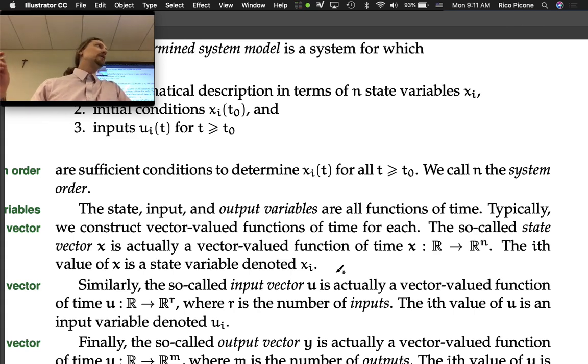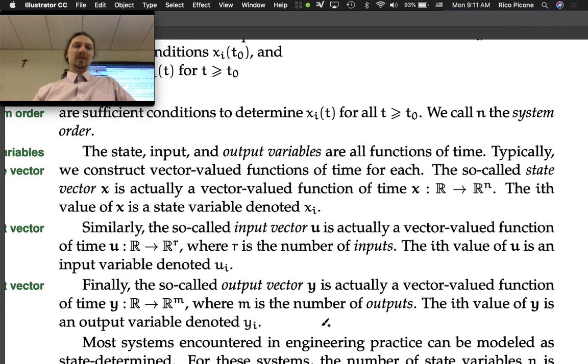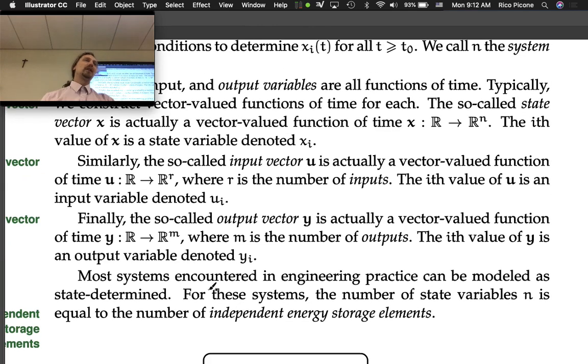Similarly, the input vector u is actually a vector-valued function of time u: R → R^r, where r is the number of inputs. The i-th value of u is an input variable denoted u_i. We put all the inputs into a vector-valued function.